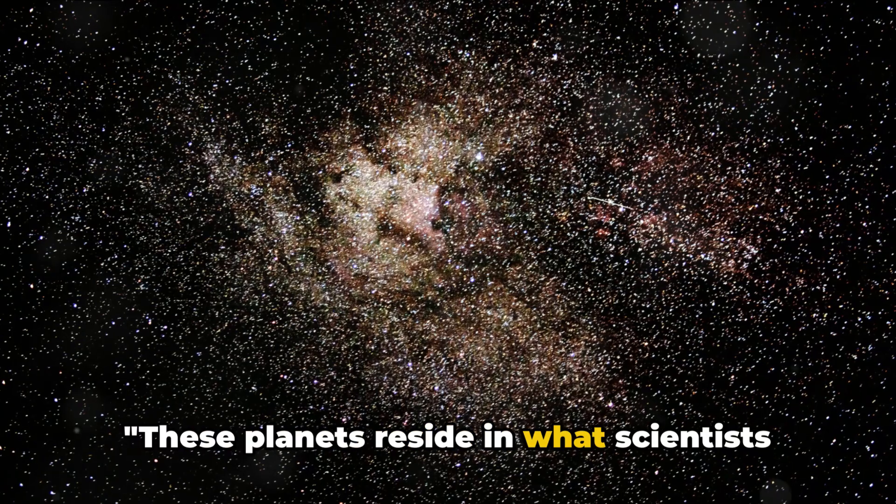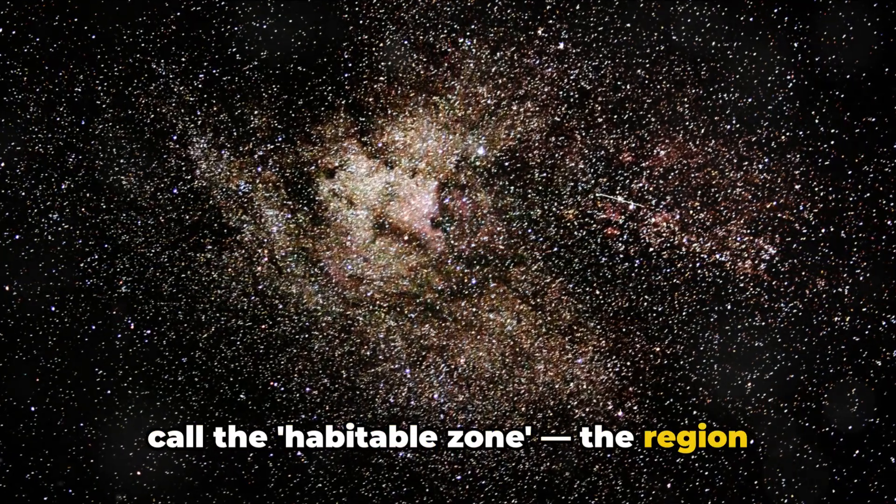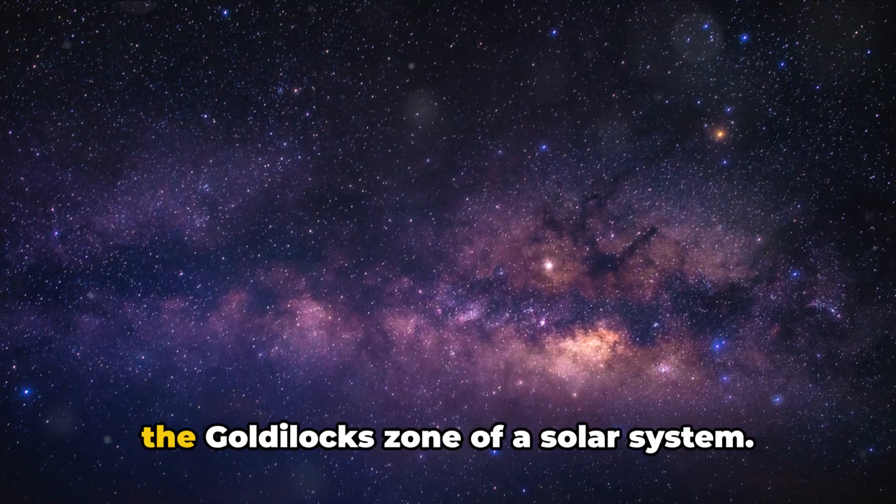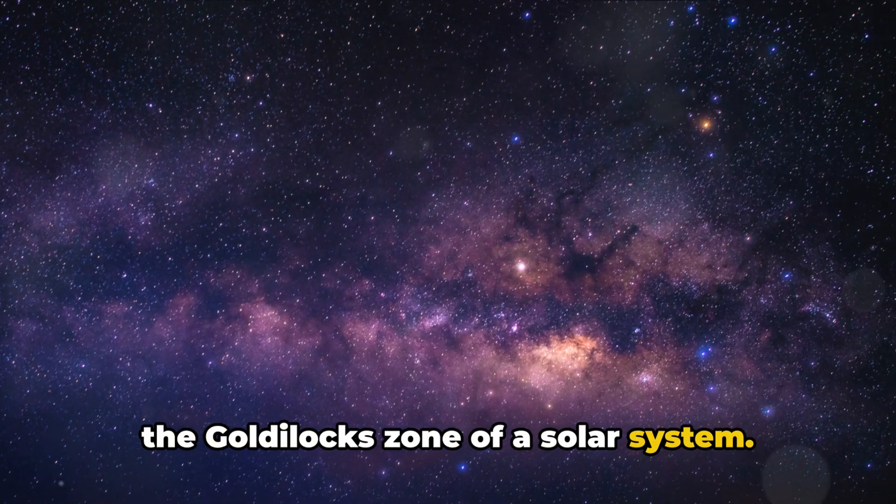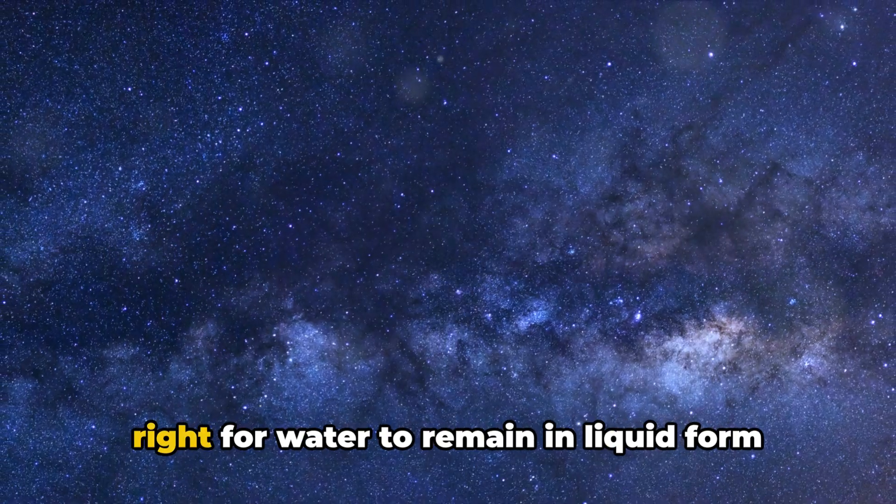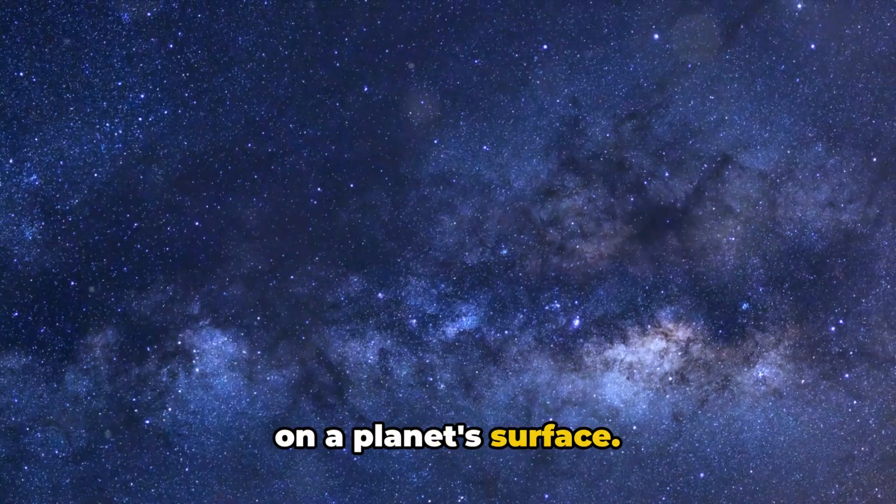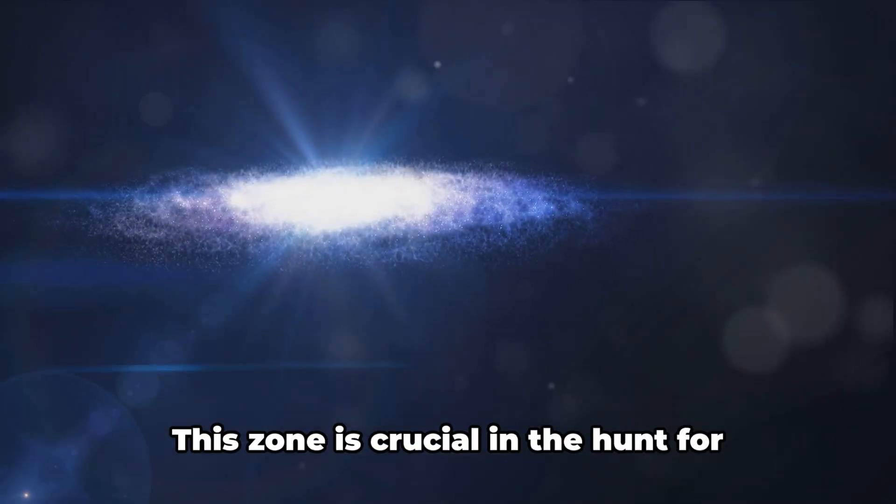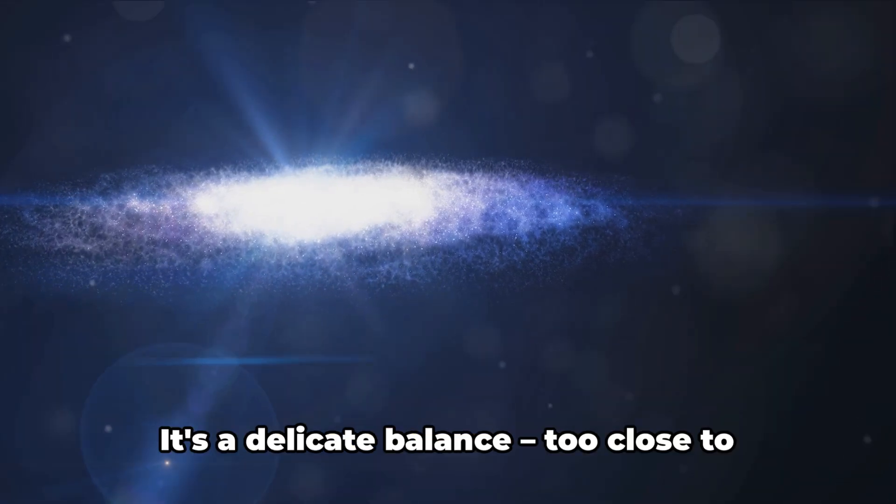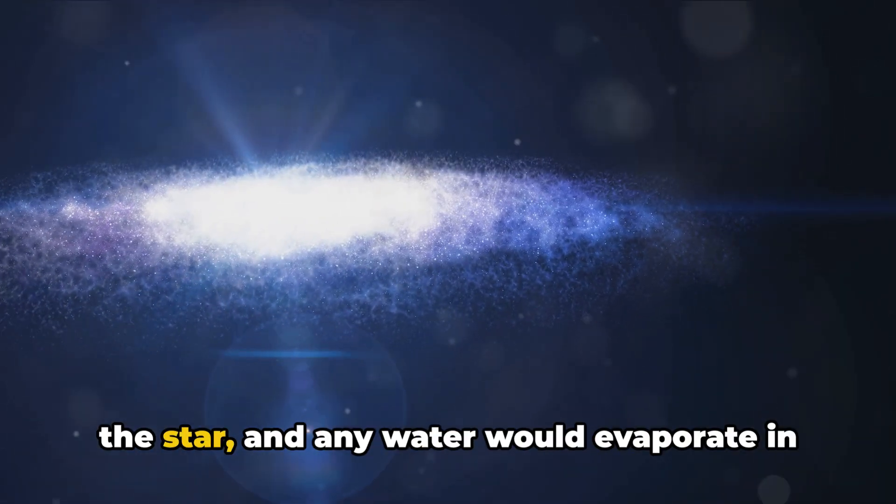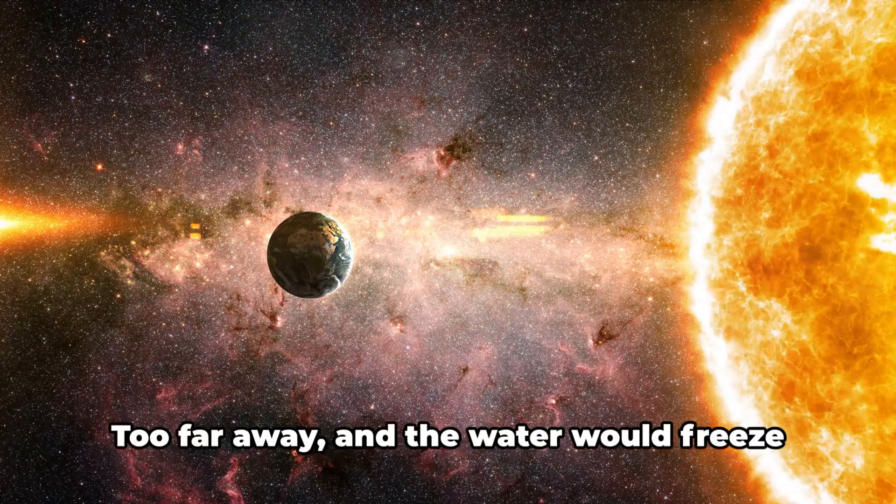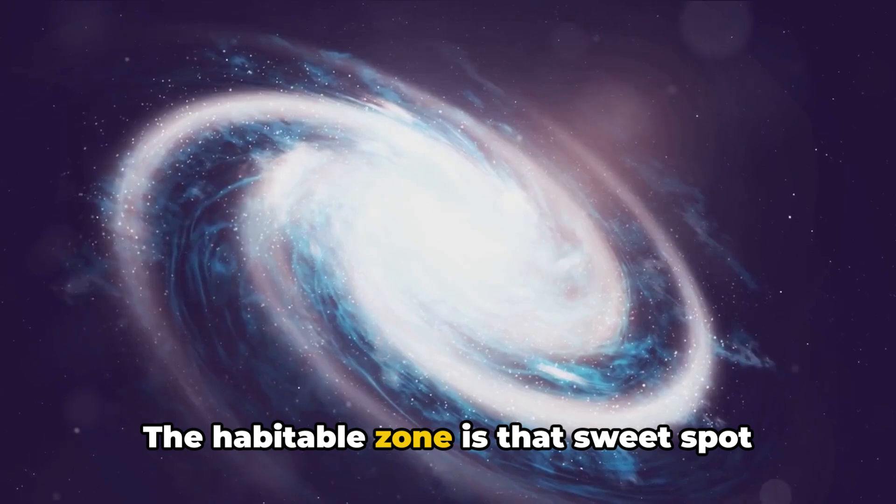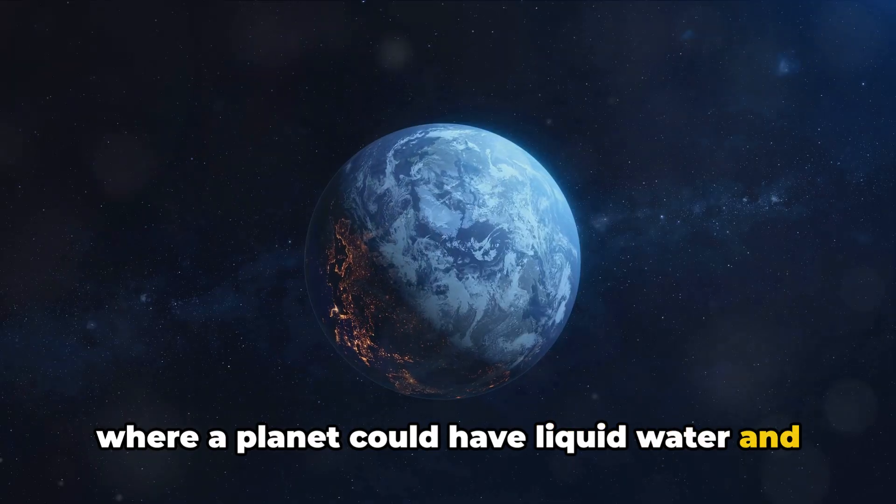These planets reside in what scientists call the Habitable Zone, the region around a star where conditions may be right for liquid water to exist. You can think of the Habitable Zone as the Goldilocks Zone of a solar system. It's not too hot, not too cold, but just right for water to remain in liquid form on a planet's surface. And where there's water, there's the potential for life as we know it. This zone is crucial in the hunt for Earth-like planets. It's a delicate balance. Too close to the star, and any water would evaporate in the intense heat. Too far away and the water would freeze in the icy cold. The Habitable Zone is that sweet spot where a planet could have liquid water and potentially life.